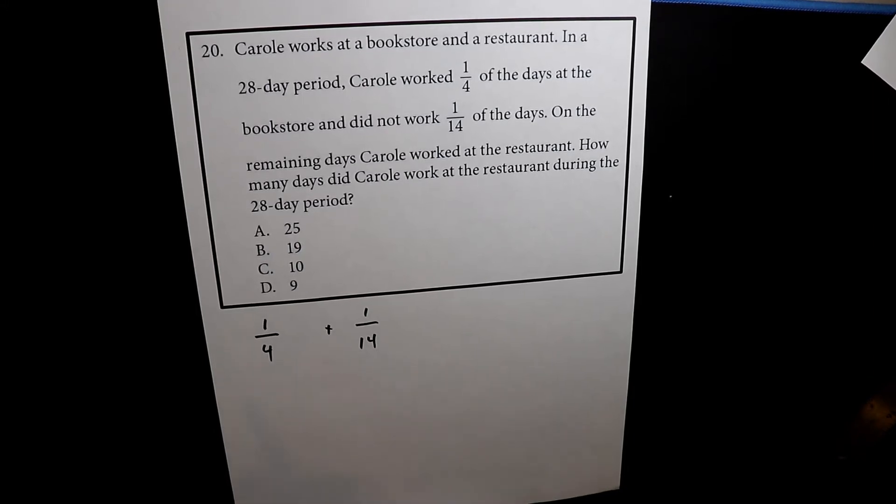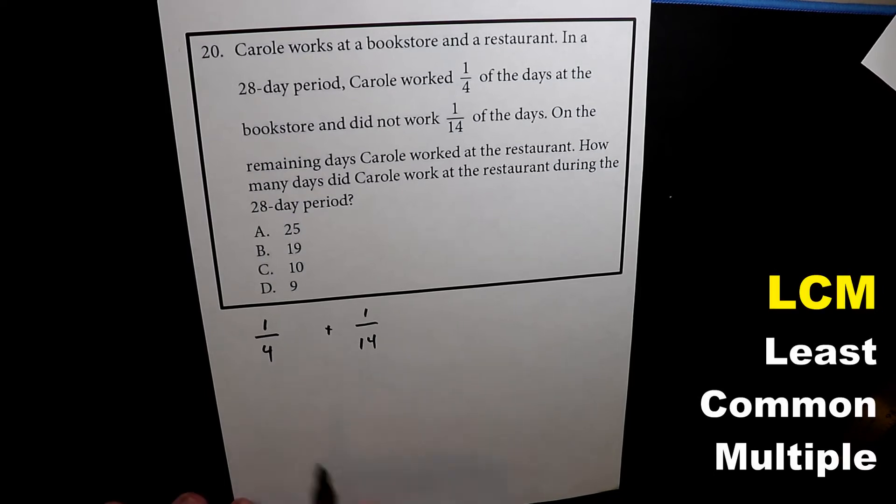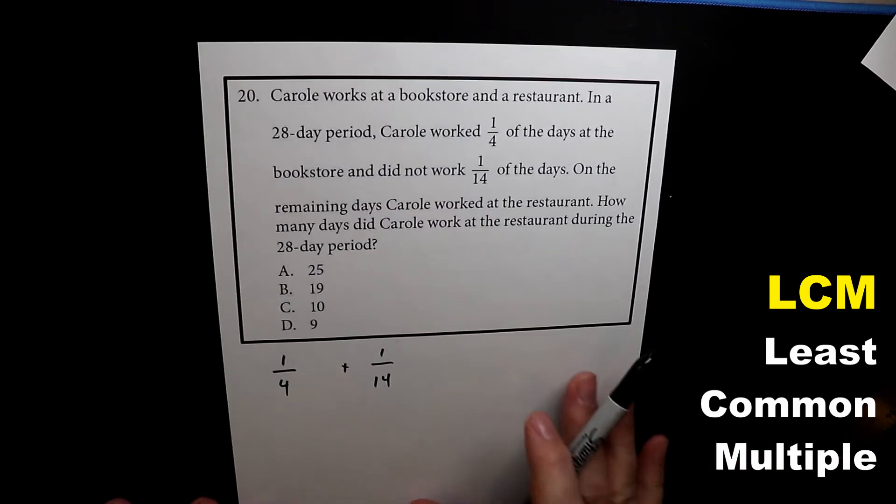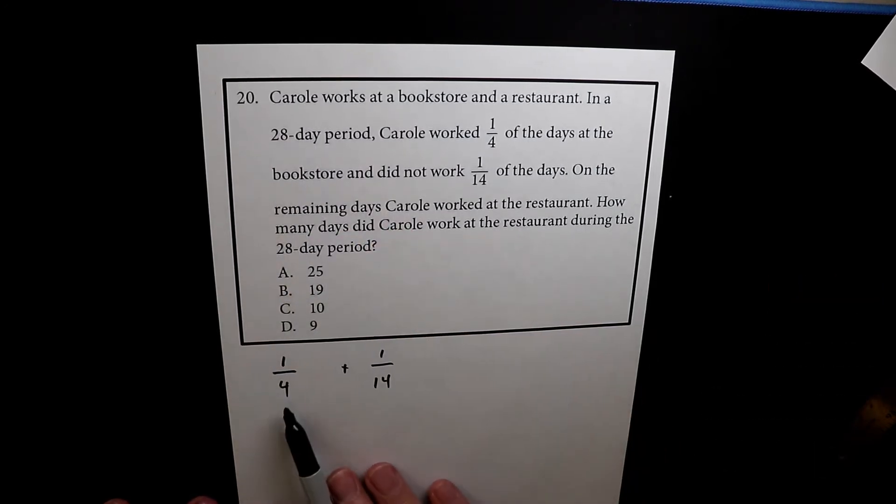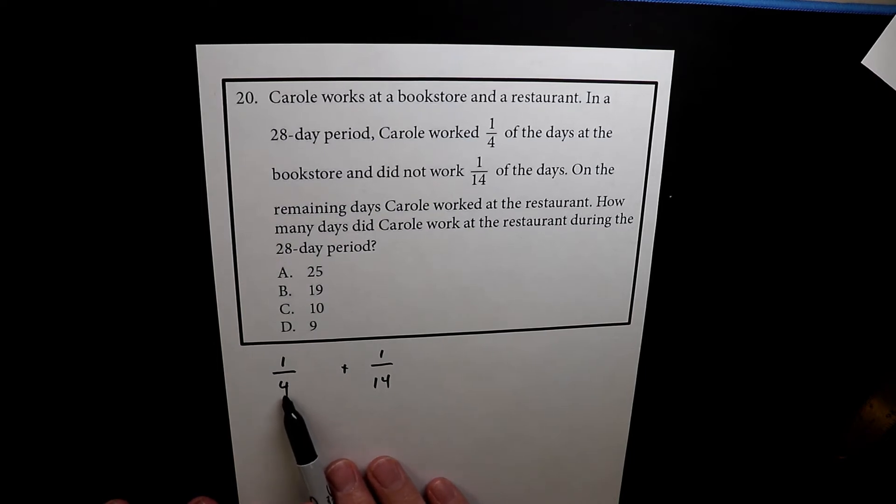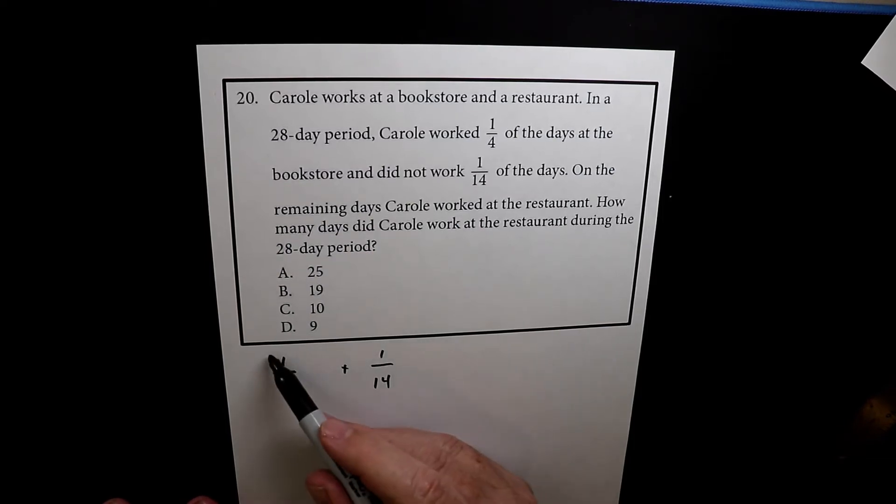So what I want to do is I want to convert this into the LCM. They kind of give it to you automatically because I look at 28 and I know that I can multiply four by seven to get 28, and I can multiply 14 by two to get 28.